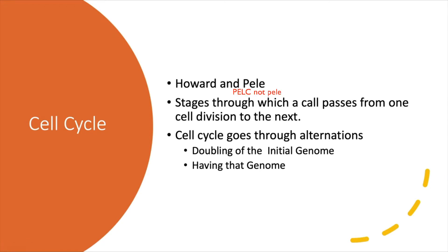Howard Pella in 1953 was the individual credited with first describing the cell cycle. The cell cycle is defined as the stages through which a cell progresses from one cell division cycle to the next. During this phase, the cell grows and prepares for division. What happens is the genome is doubled during the synthesis phase, or S phase of interphase, and then that doubled genetic information is divided during the mitotic phase, or M phase.